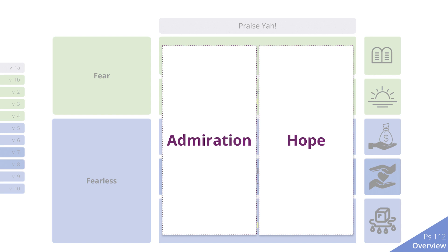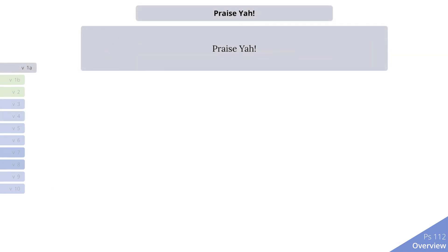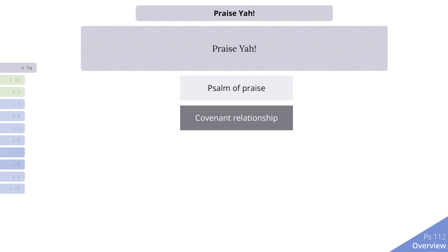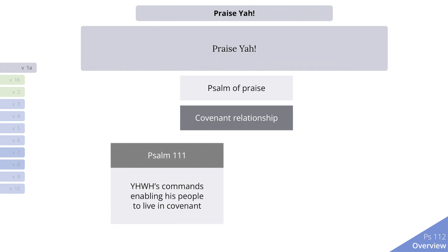We'll now go through the psalm verse by verse. Superscription: 'Praise Yah.' This superscription was likely added to the psalm after its initial composition, when it was included in the Book of Psalms. It marks this as a psalm of praise. The reason for praising the Lord is always found in the covenant relationship. Psalm 111, the psalm just before this, has many parallels. In Psalm 111, the praise celebrates the great deeds the Lord accomplished, and the greatest praise is given to the commandments that enable His people to live in covenant with Him.